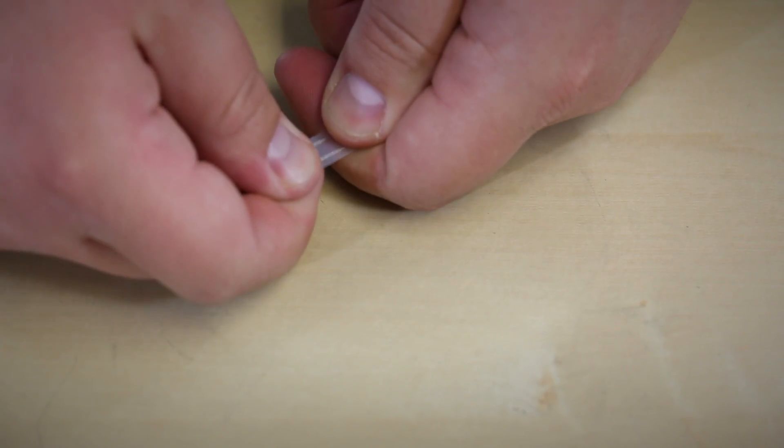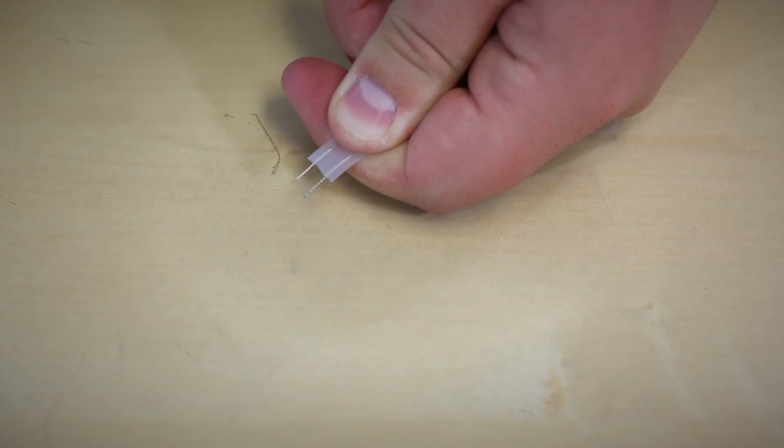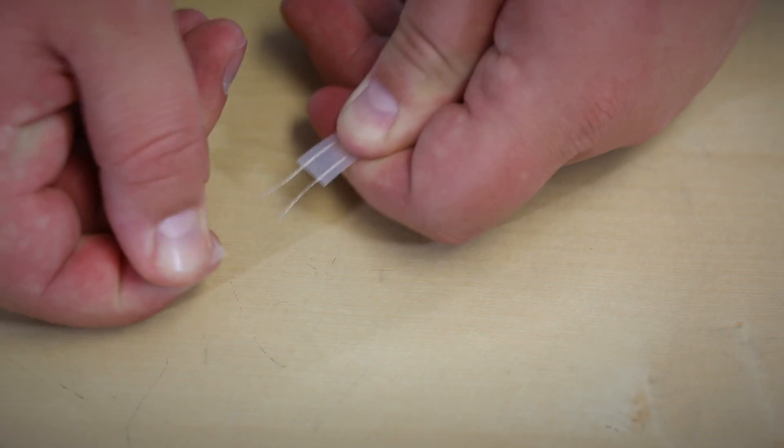We're going to firmly pull this sheathing off to expose the 2 threads. The one side that's going to connect to the lamp, we're going to want to trim about a quarter of an inch. On the other side, which connects to the molex connector, we're going to want 3 quarters of an inch to an inch.